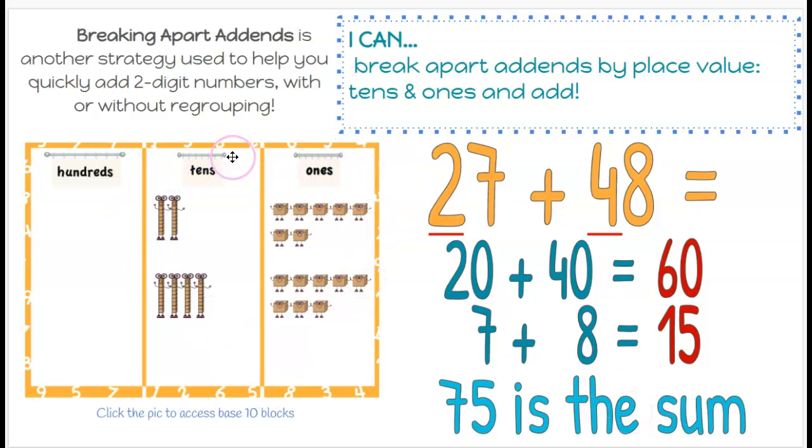Here you see our HTO chart. We put our tens and ones, or we could draw QuickPix to also show 27 plus 48. And again, 2 tens plus 4 tens is 6 tens, and 7 ones plus 8 ones is 15 ones.